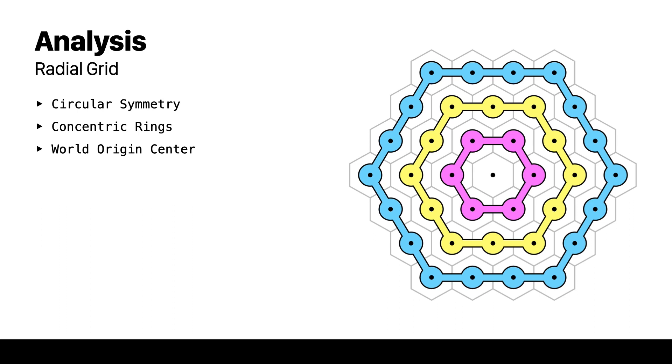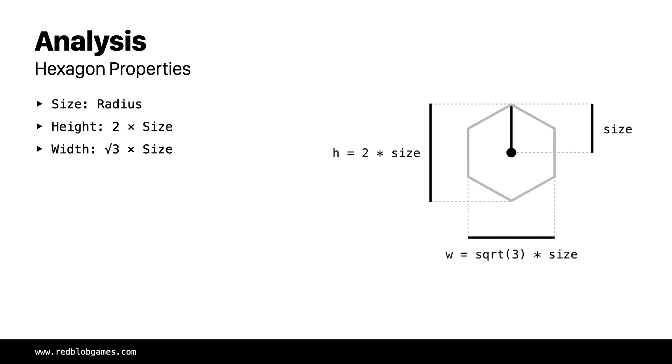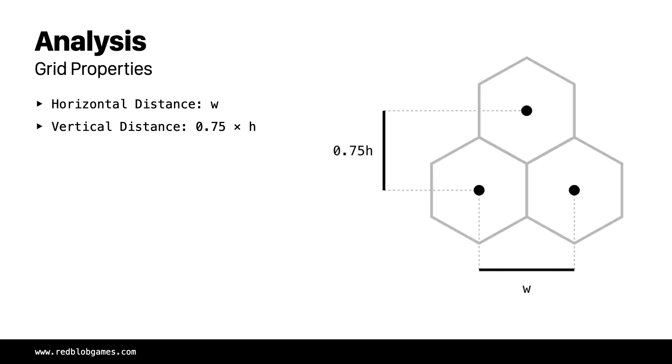Before moving further we should look at some properties that we're going to be using. From the radius of the hexagon we can get its height and width. Both the width and height of the hexagon are needed to calculate the distances between the points in the grid. A big shout out to Amit Patel and redblobgames.com. His website is my bible when it comes to hexagons, grids, game dev and math.